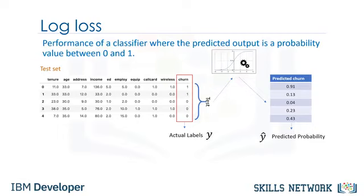Logarithmic loss, also known as log loss, measures the performance of a classifier where the predicted output is a probability value between 0 and 1. So, for example, predicting a probability of 0.13 when the actual label is 1 would be bad and would result in a high log loss.